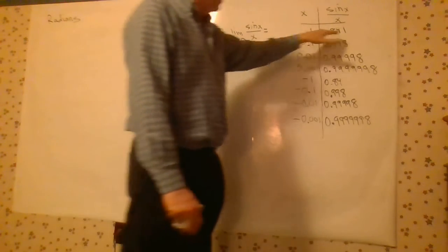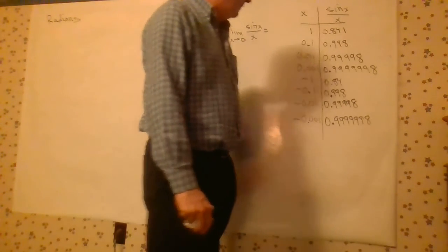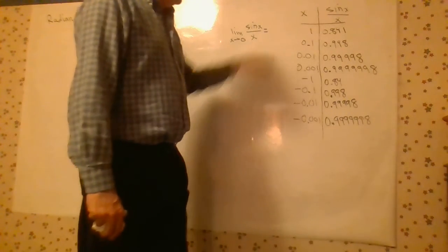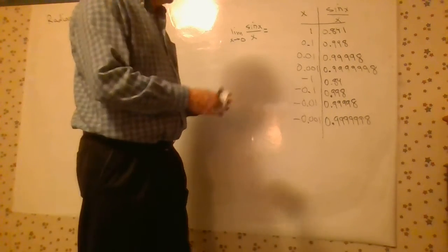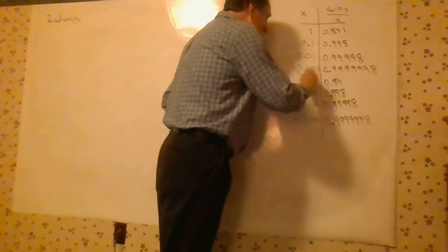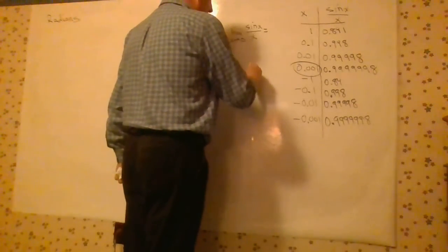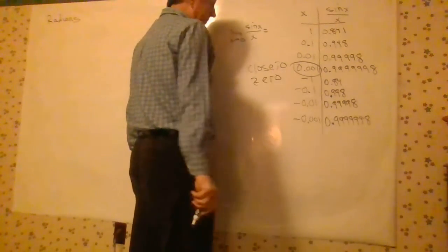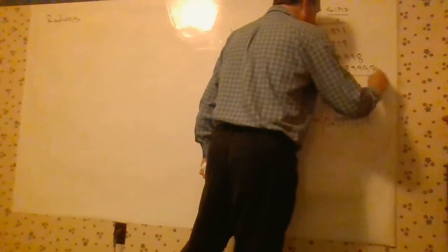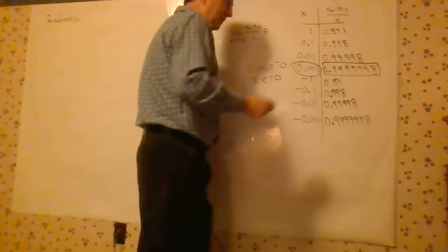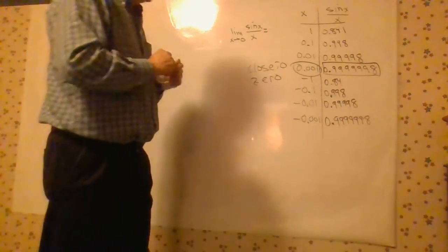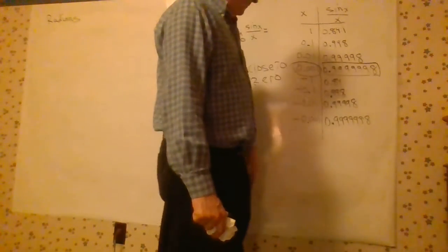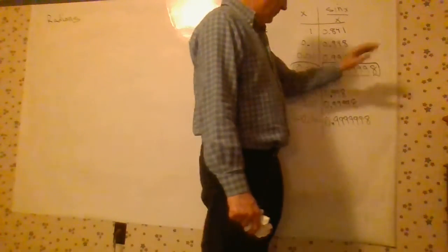And you can evaluate this on a calculator. You'll end up with 0.841, 0.998, 0.99998, and then 0.9999998. And as x gets closer to zero, that's close to zero. What's happening to this? It's getting closer and closer to one. If I add a zero here, I add two more nines. If I add another zero, I add two more nines. You can see the pattern.